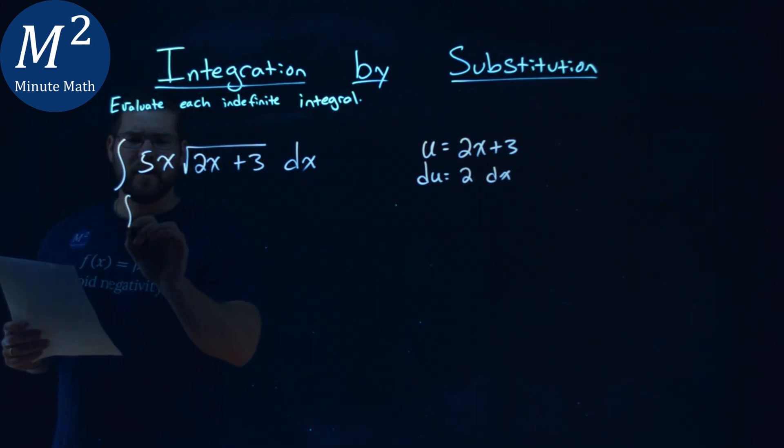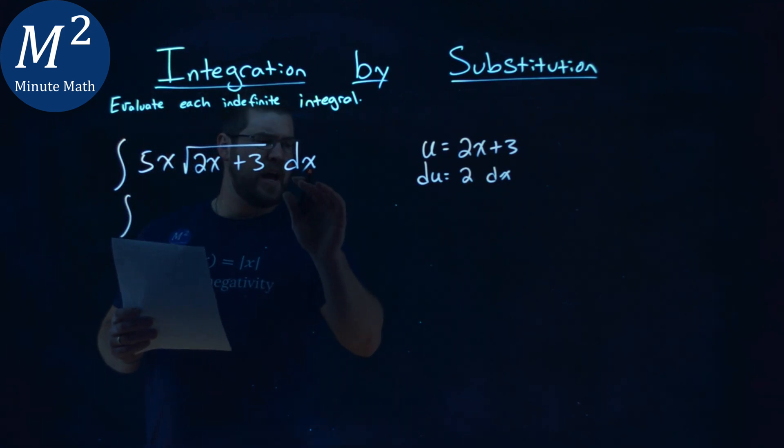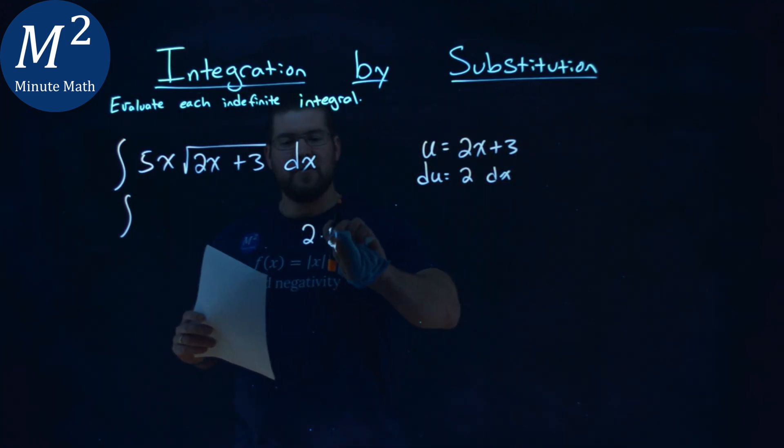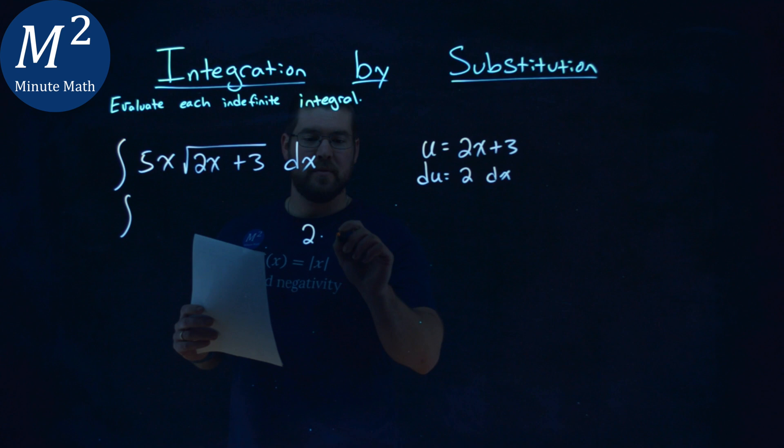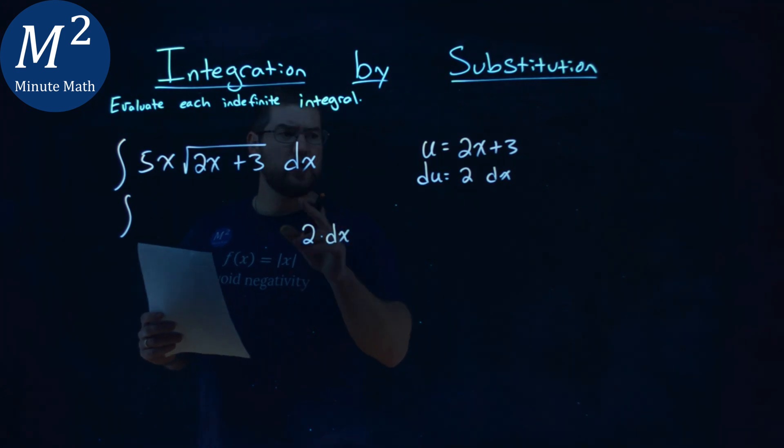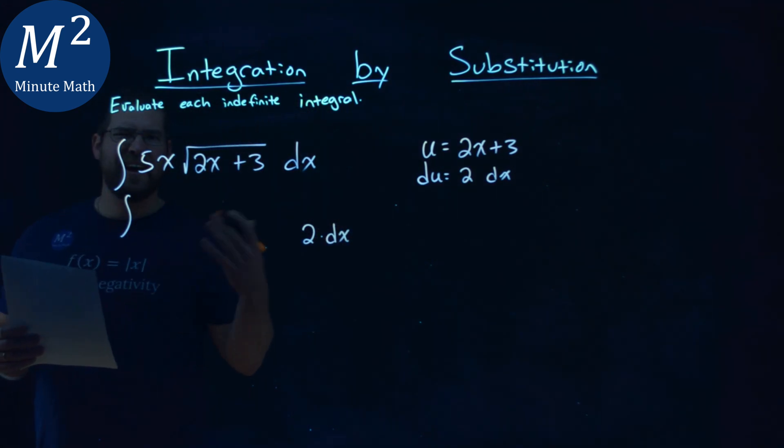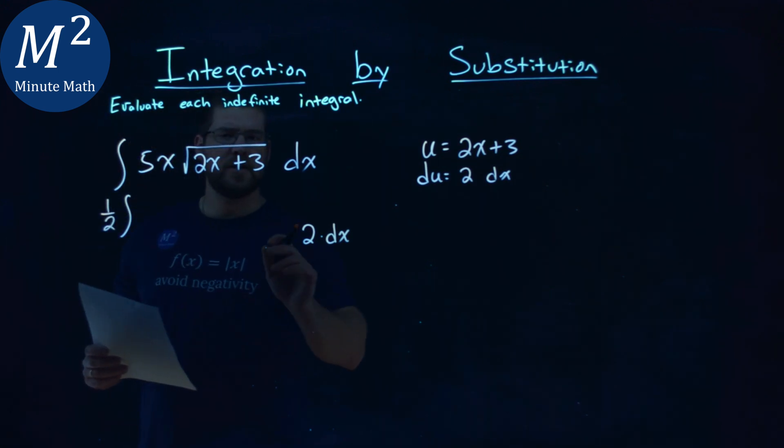So if I rewrite this end part here to be, instead of dx, just a 2 dx, not 2 times 2, but 2 times dx, I can do that, but I have to cancel it out outside of the integral. Multiply it by a 1 half right there. Doesn't change the problem at all.